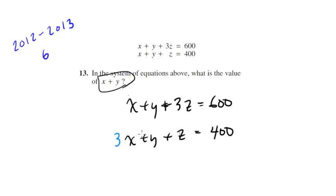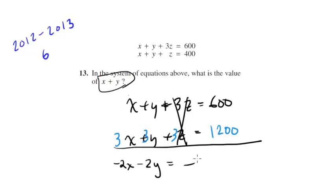I want to get rid of the 3z, so I'm going to multiply the bottom equation by 3. So that's going to be 3x plus 3y plus 3z is equal to 400 times 3, which is 1,200. And now I can go ahead and subtract the bottom from the top. So x minus 3x is negative 2x, y minus 3y is minus 2y. These cancel, which is good, and then we get negative 600.